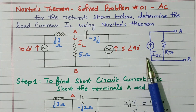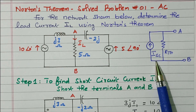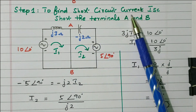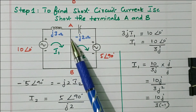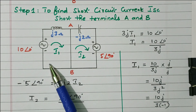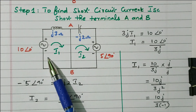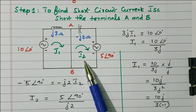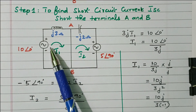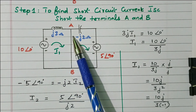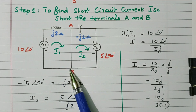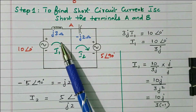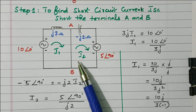Our aim is to find the Norton equivalent circuit. Step one is to find the short circuit current ISC. To find ISC, short the terminals AB. After short-circuiting, we use the loop method. The first loop has current I1, the second loop has current I2. I1 flows downwards and I2 flows upwards through AB, so the current through AB is I1 minus I2.